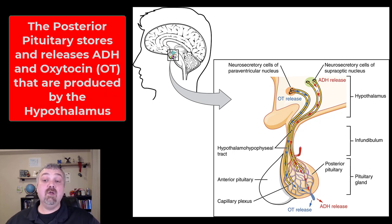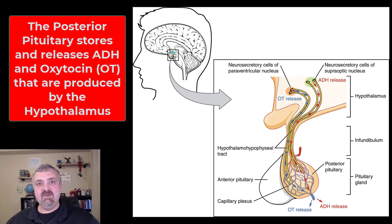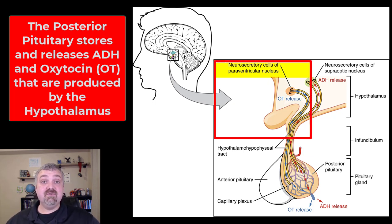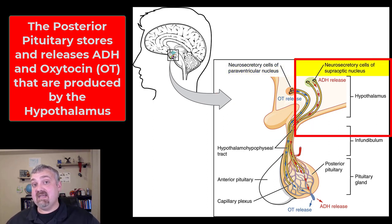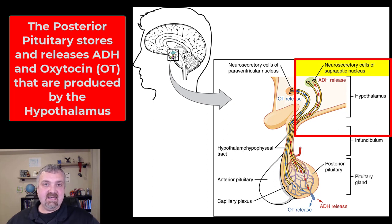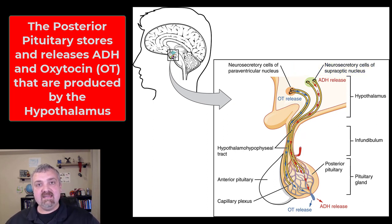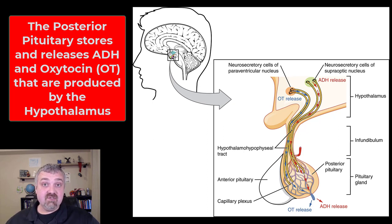Now we have the posterior lobe of the pituitary gland — but remember, these hormones are only released and secreted from the posterior pituitary; they're actually produced by the hypothalamus. Oxytocin is produced by neurosecretory cells from the paraventricular nucleus of the hypothalamus, and ADH, antidiuretic hormone, is produced by neurosecretory cells of the supraoptic nucleus. Antidiuretic hormone increases the reabsorption of water at the kidneys, decreasing urinary production to keep fluid volume up.